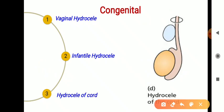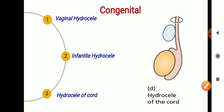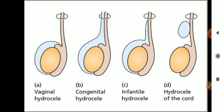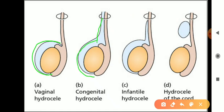In hydrocele of the cord, the processus vaginalis closes but fluid accumulates in the vas deferens. Looking at a comparative picture: in vaginal hydrocele fluid is only in the tunica vaginalis; in congenital hydrocele fluid is in the tunica vaginalis and processus vaginalis and can extend to the peritoneal cavity; in infantile hydrocele it stays below the inguinal ring; and in hydrocele of the cord the fluid fills the vas deferens or epididymis.